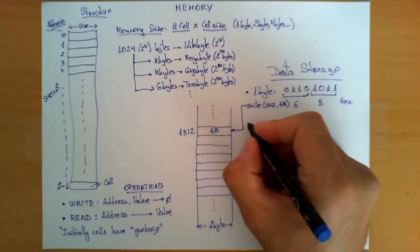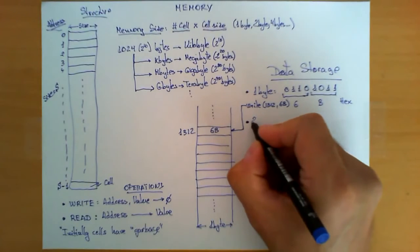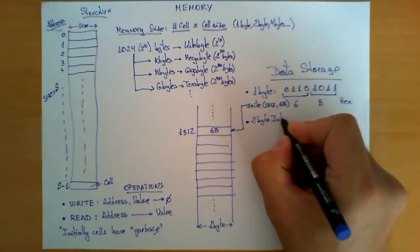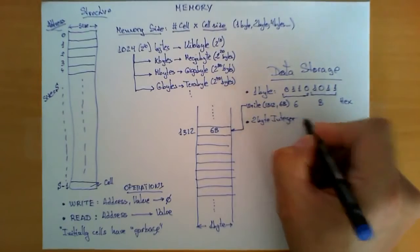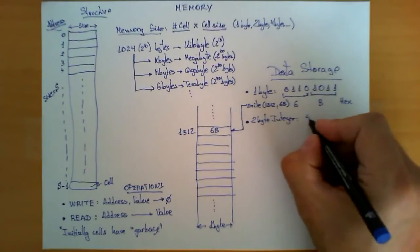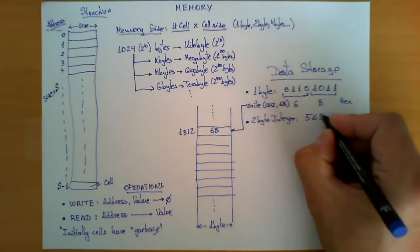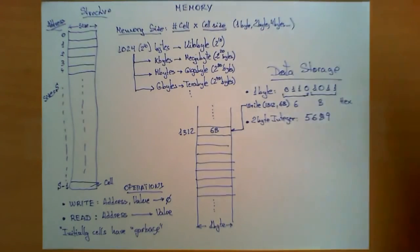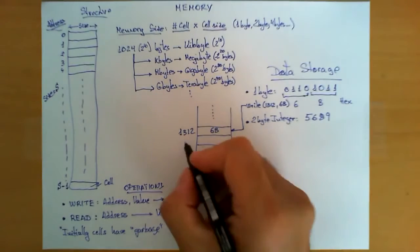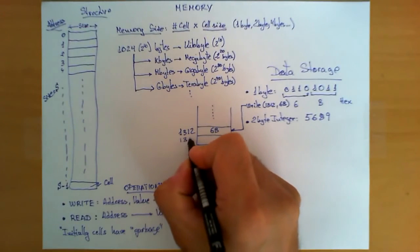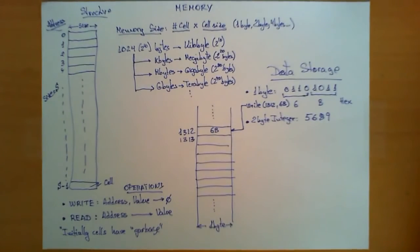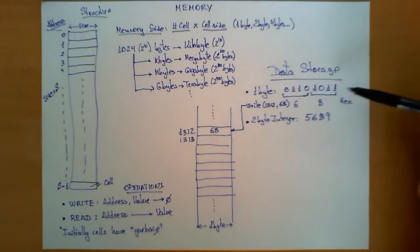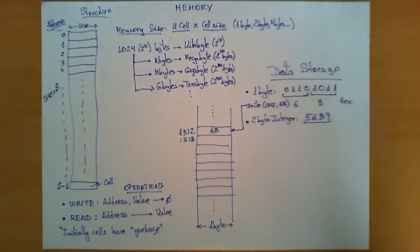It's a little bit more complicated. What if I want to store a two-byte integer in memory? Let's assume, for example, it's the number 5689. How do I store this integer into memory? And let's assume that I want to store that integer in position 1313. How do I do that? Well, I basically apply the same trick here, but with a little bit of a twist. First, I need to know what is the binary representation of this number.